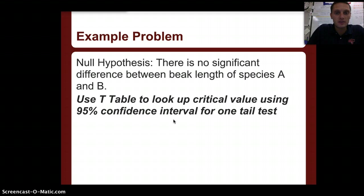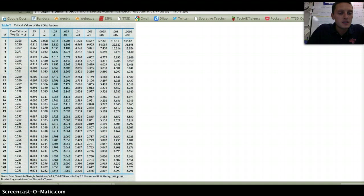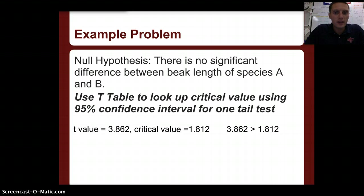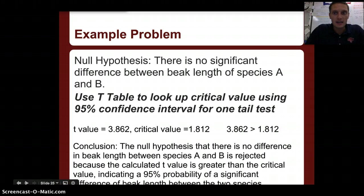Our null hypothesis is that there is no significant difference between beak length of species A and B. Using a t-table with a 95% confidence interval for a one-tail test, our degrees of freedom is 10. Finding 10 in the degrees of freedom column and scrolling to the 0.05 column, our critical value is 1.812. Since our t-value of 3.862 is greater than the critical value of 1.812, the null hypothesis is rejected — there is a significant difference in beak length between species A and B.